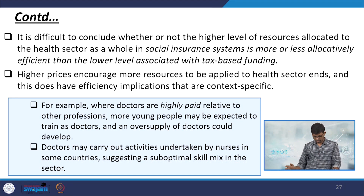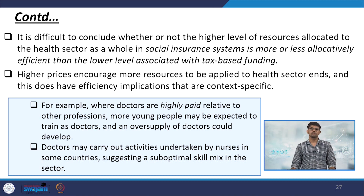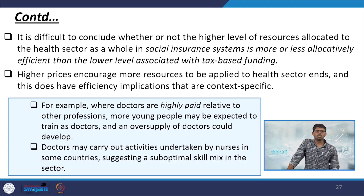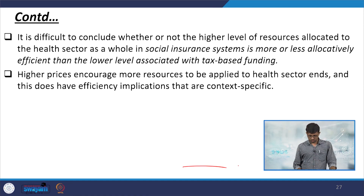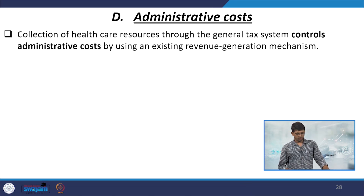For example, in cases where doctors are highly paid relative to other professions, more young people may be expected to train as doctors, and an oversupply of doctors could develop. Doctors may carry out activities undertaken by nurses in some countries, suggesting a suboptimal skill mix in the sector. We are discussing all those possibilities to address how cost can be controlled.